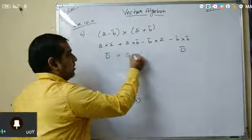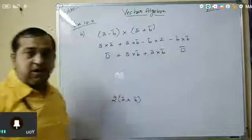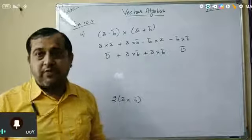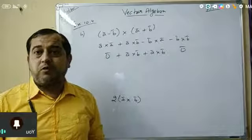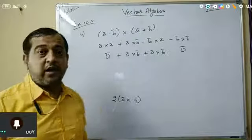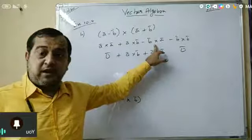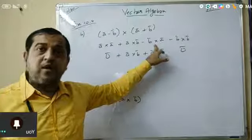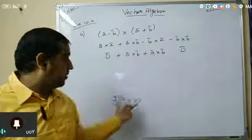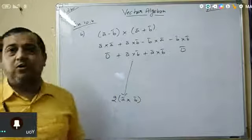This leaves plus a cross b and plus a cross b, which gives you 2 times a cross b. That is what we needed to prove.